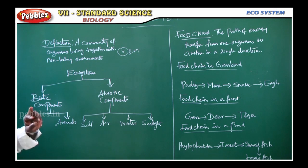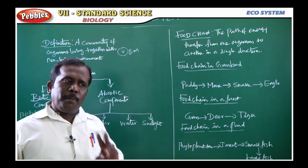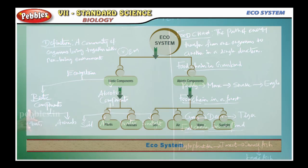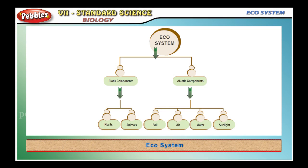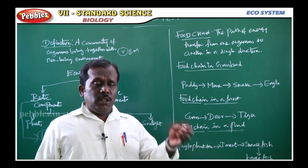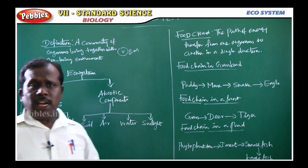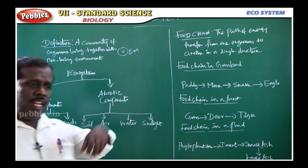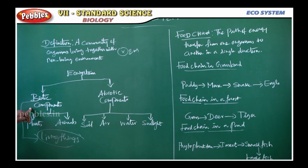Ecosystem normally has two components. One is biotic component, another one is abiotic component. Biotic component means living things. Living things come under biotic component — for example, plants, animals, even unicellular organisms like chlamydomonas, bacteria — everything comes under biotic component.